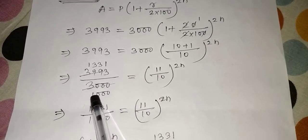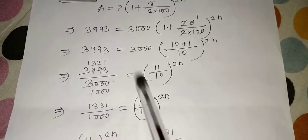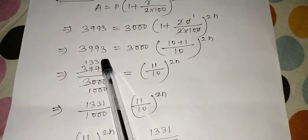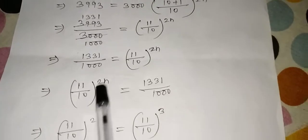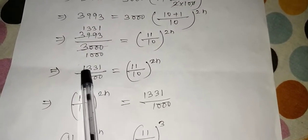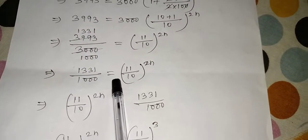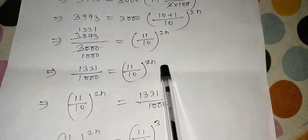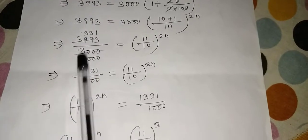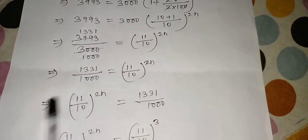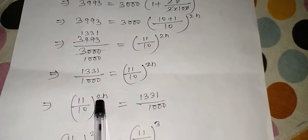So 3993/3000, and here 10 + 1 is 11/10 to the power 2n. So here you can cancel with 3. 3 ones, and then 3, 3 zeros, 3 ones, 3, 3, 3, 3, 3 ones, like that you have to cancel. After cancelling we got 1331/1000 = same thing I wrote here, 11/10 to the power 2n. Now you interchange. Bring this number this side and take this one that side.